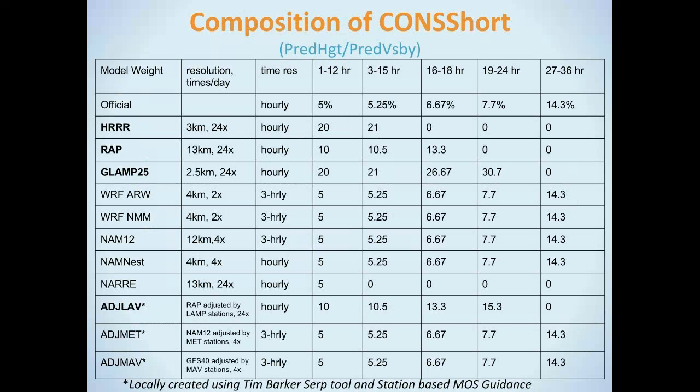Concentrating on predominant height and predominant visibility, I'm looking at the different weighting from the model. In the early hours, I put a much higher weight on some of our hourly and higher-res models such as the HRRR, GLAMP, and the adjusted LAMP — which is similar to GLAMP except it's an adjusted model based off LAMP station guidance, adjusting the RAP model guidance. As you get further out, there's more and more weight towards what the official is saying and less weight towards those early models because they just don't exist anymore, and you end up with more of the synoptic scale models.